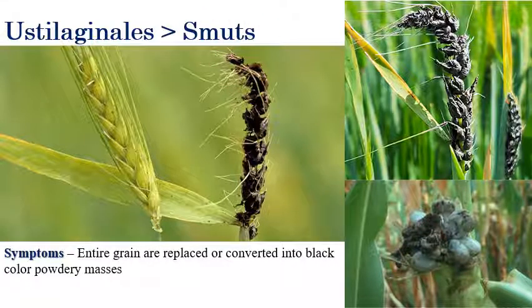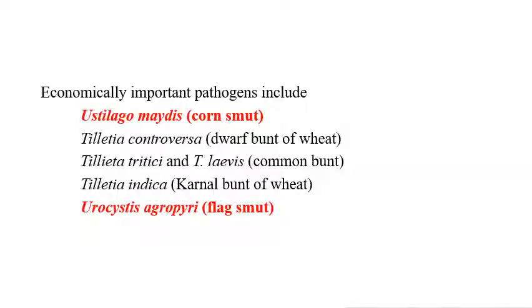Now we are going to see only about smuts. A few of the economically important pathogens that come under Ustilaginomycotina include: corn smut, caused by Ustilago maydis; dwarf bunt of wheat, caused by Tilletia controversa; common bunt, caused by Tilletia tritici and Tilletia laevis; kernel bunt of wheat, caused by Tilletia indica; and flag smut, caused by Urocystis agropyri.